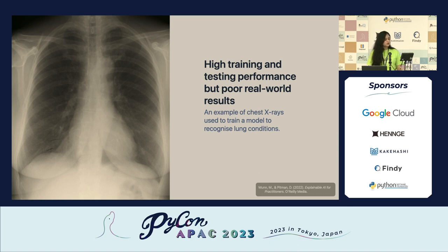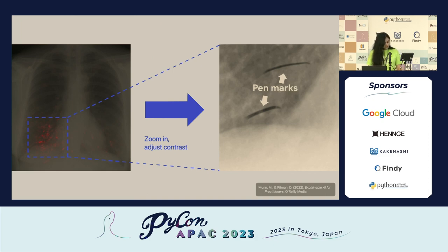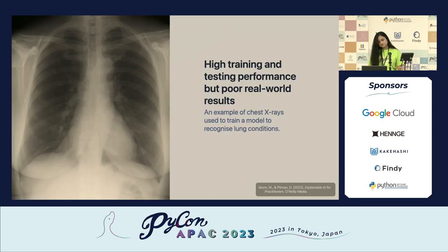Here is an example from an AI model where Python was used to understand why our AI model was not working. This AI model was performing very well in training and testing, but had very poor real-world results. To understand the problem, Python was used, and a saliency map showed the highlighted areas which influenced the model to make its decision. This helped the developers fix the problem — the model was training itself on pen marks from the radiologist. If we go back, you can see the pen marks where the model was training on.